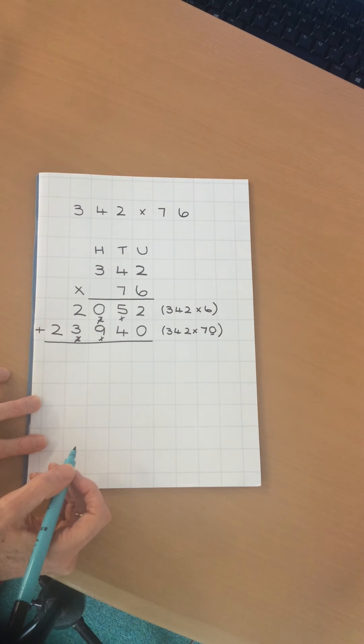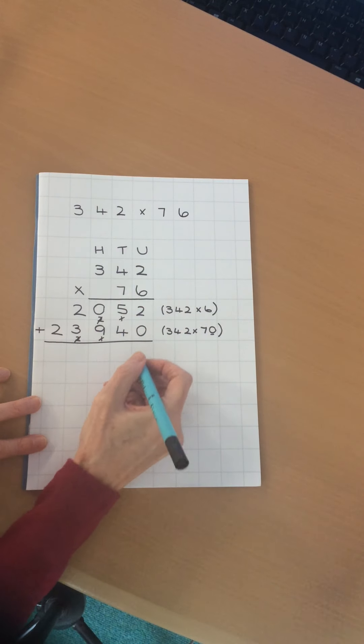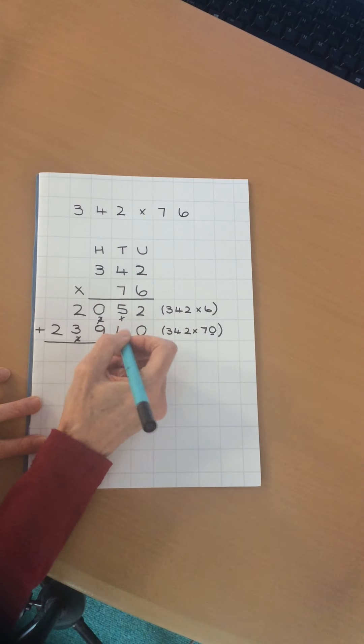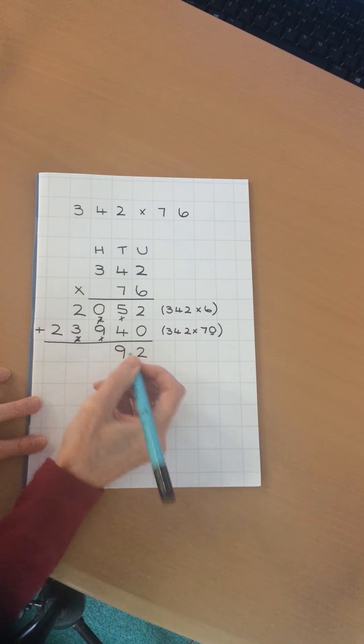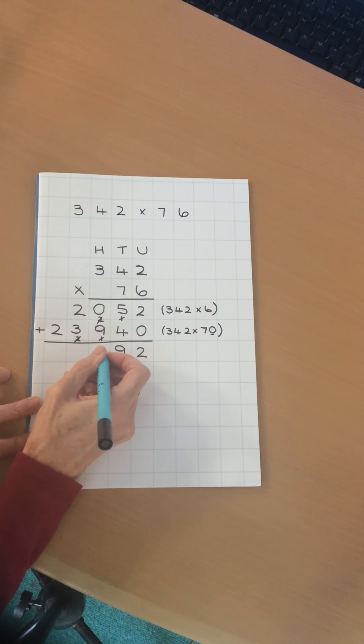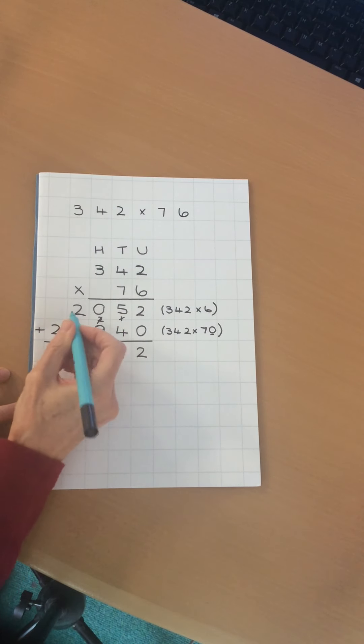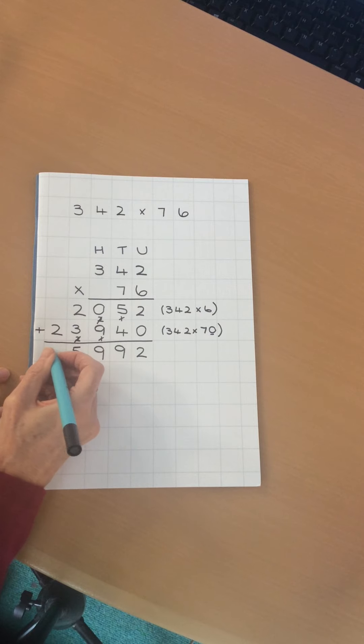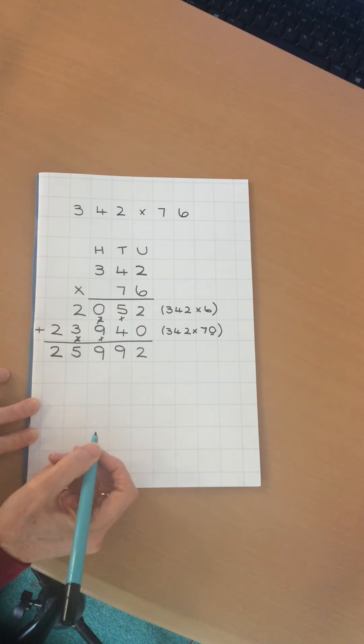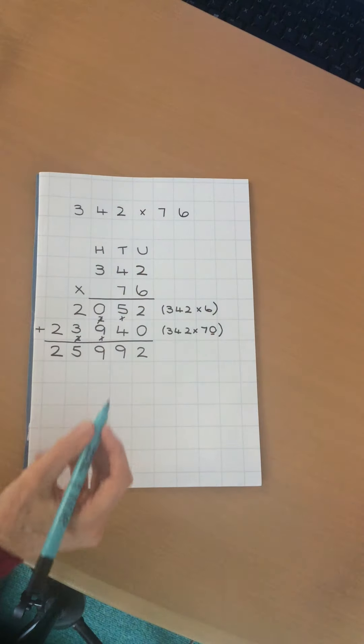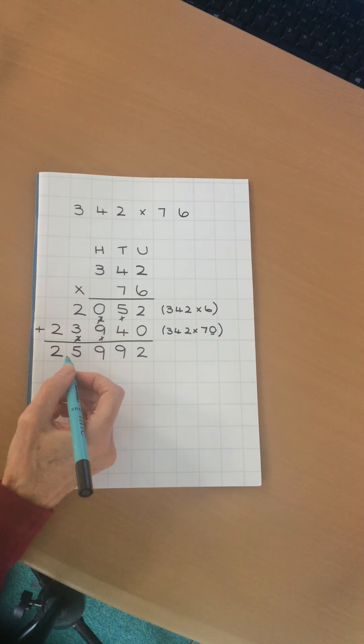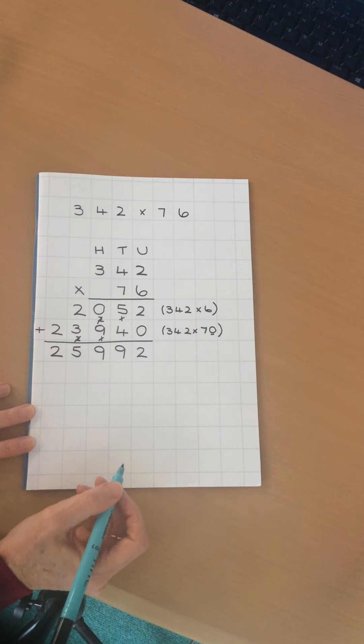I've got my addition here to remind me what to do. 2 add 0, starting obviously at the units, is 2. 5 add 4 is 9. 0 add 9 is 9 again. 2 add 3 is 5, and then nothing add 2 gives me 2. So 342 multiplied by 76 gives me 25,992.